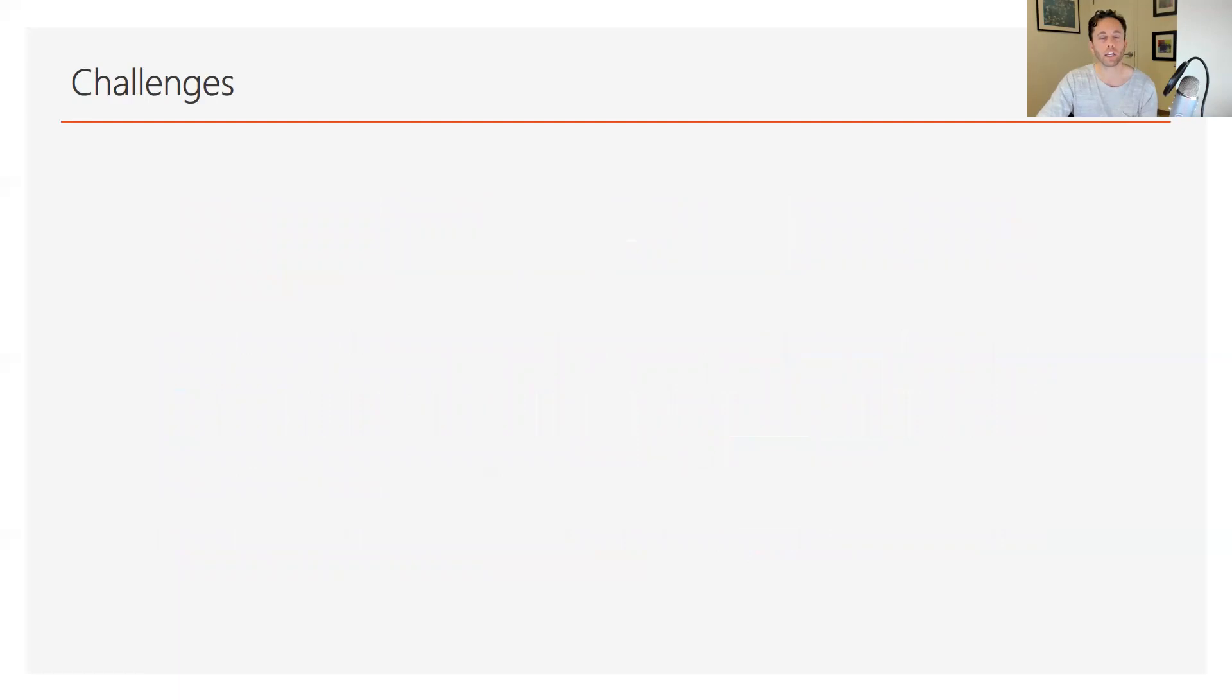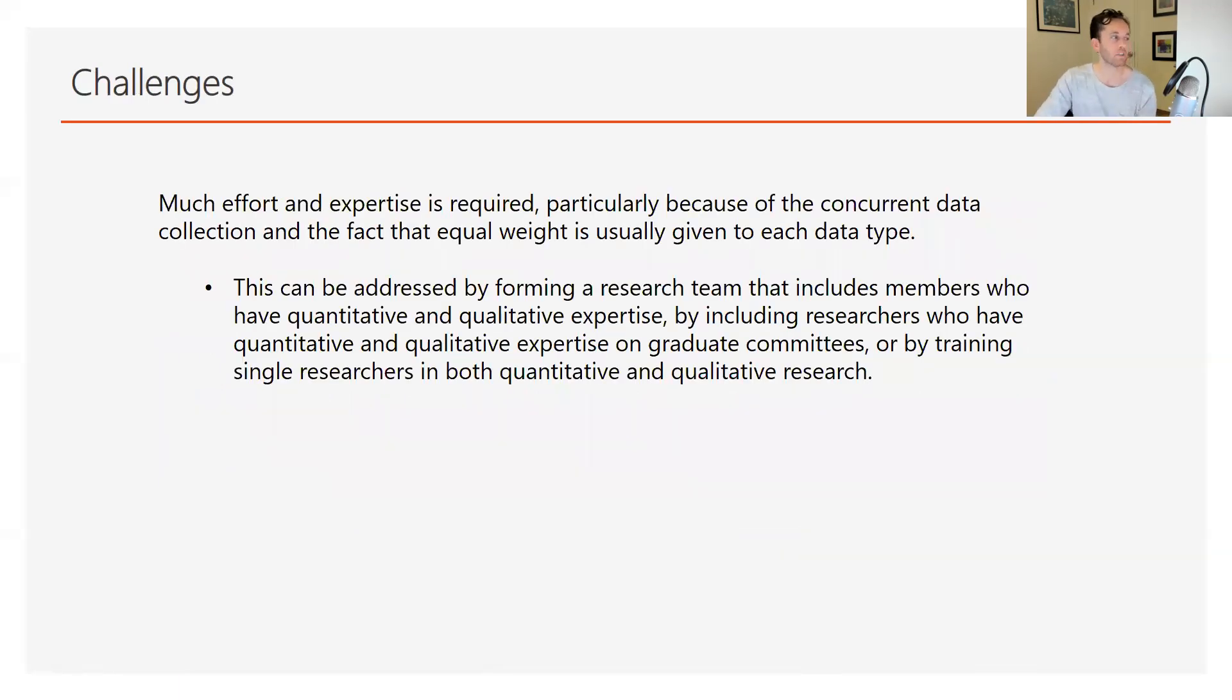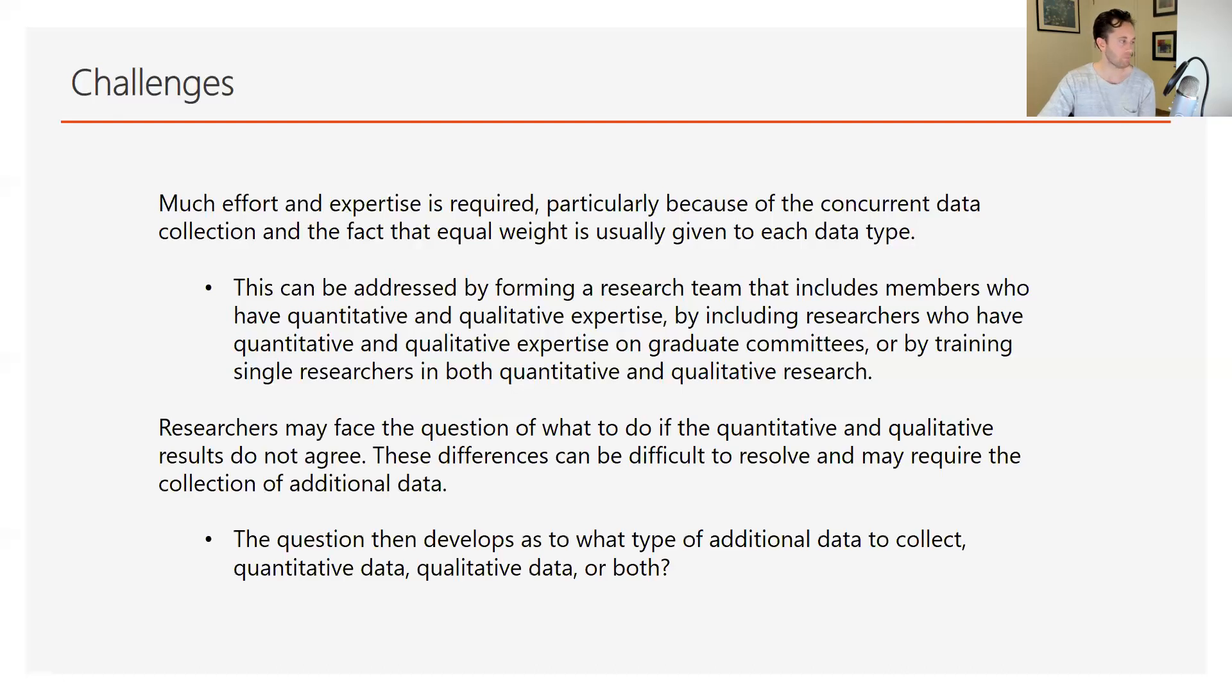Some challenges with concurrent triangulation design involve that there's much effort and expertise required because it's sometimes challenging to gather concurrent data and try to give equal weight to both of those types of data. So in fact, you may have expertise in one of these areas and not both. And sometimes you need to bring in another person to your research project who has that qualitative expertise or has that quantitative expertise to assist you in that regard. Or you may even be able to train other researchers in both of these means just to have more eyes look at this data set. Secondly, researchers often face challenges of what to do when these results between the qualitative and quantitative sectors don't necessarily see eye to eye or agree and how do we resolve this. And that's often done by collecting even more data. So it can be time consuming in that regard as well.